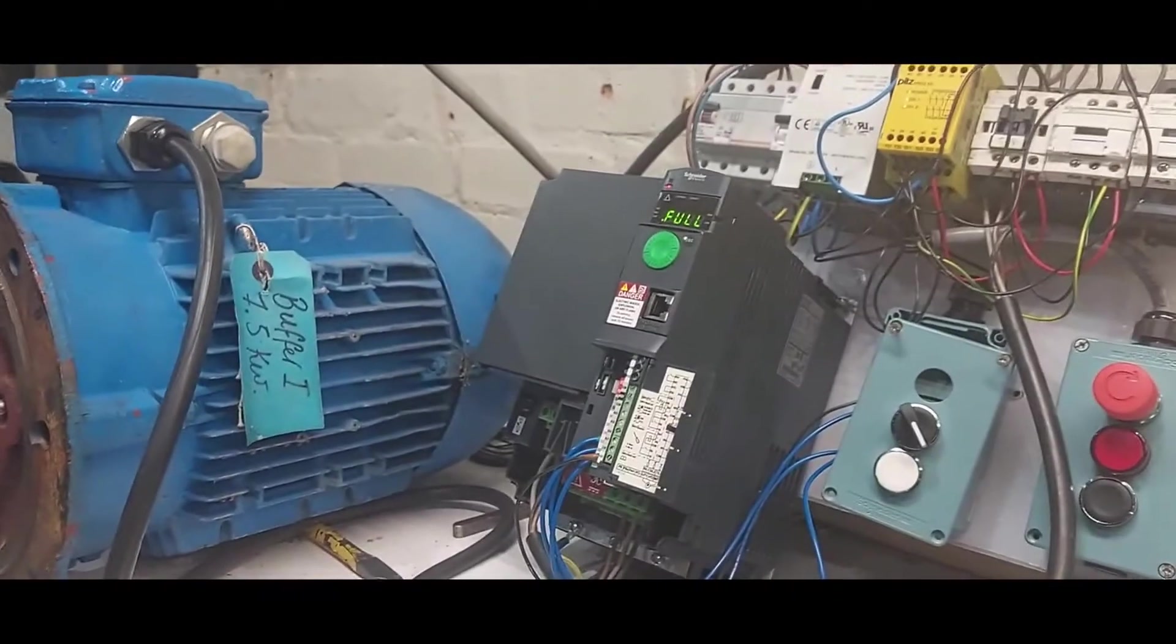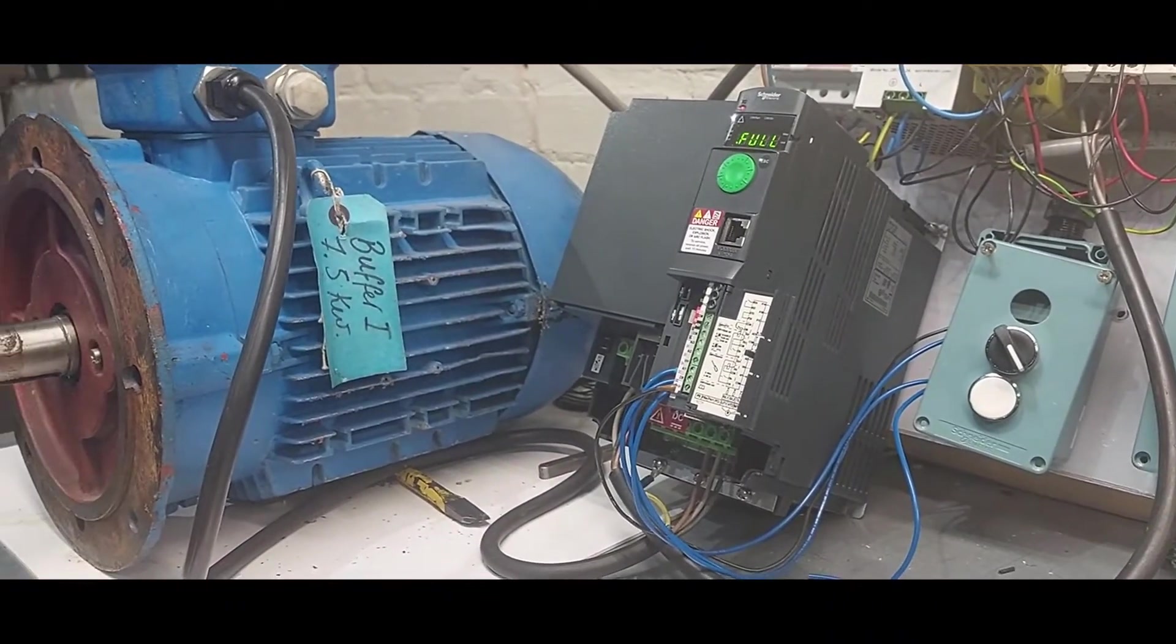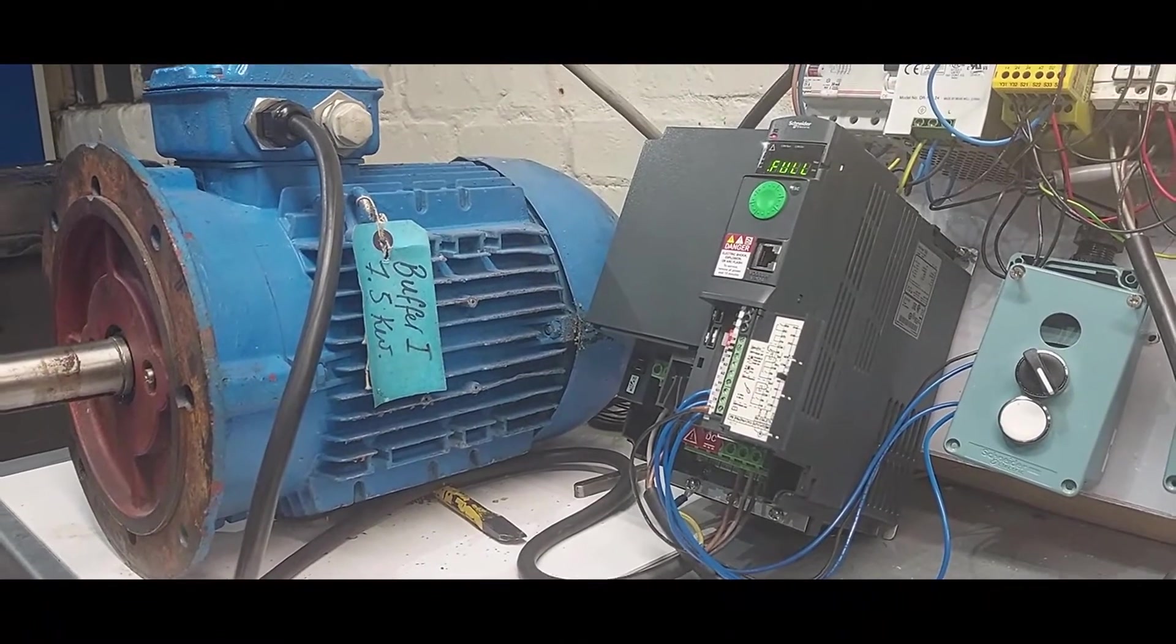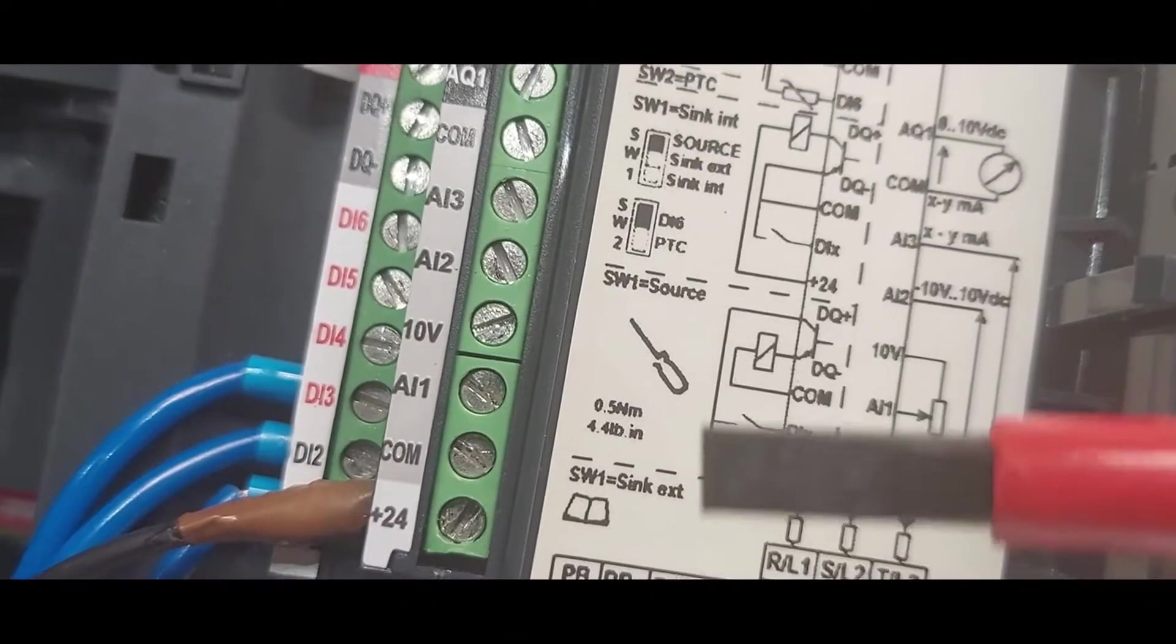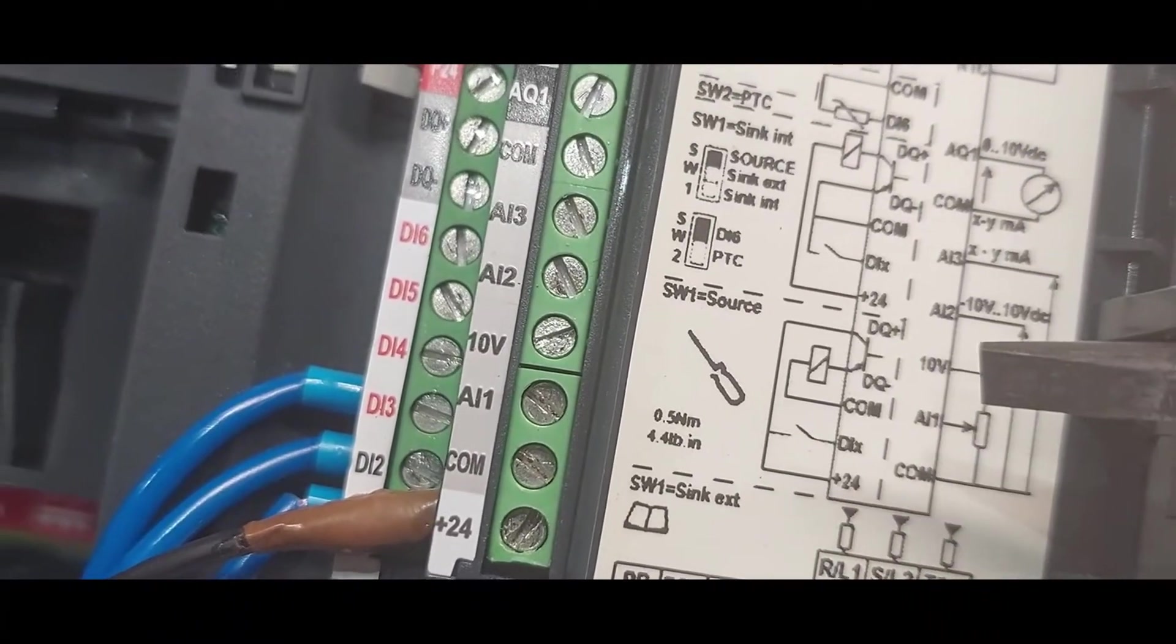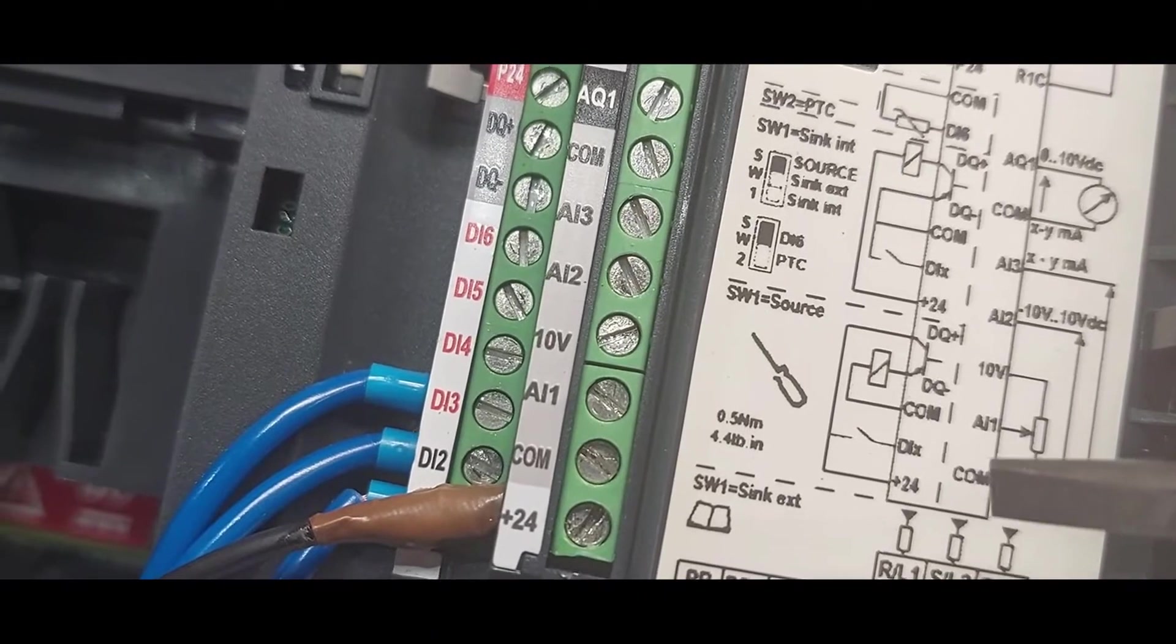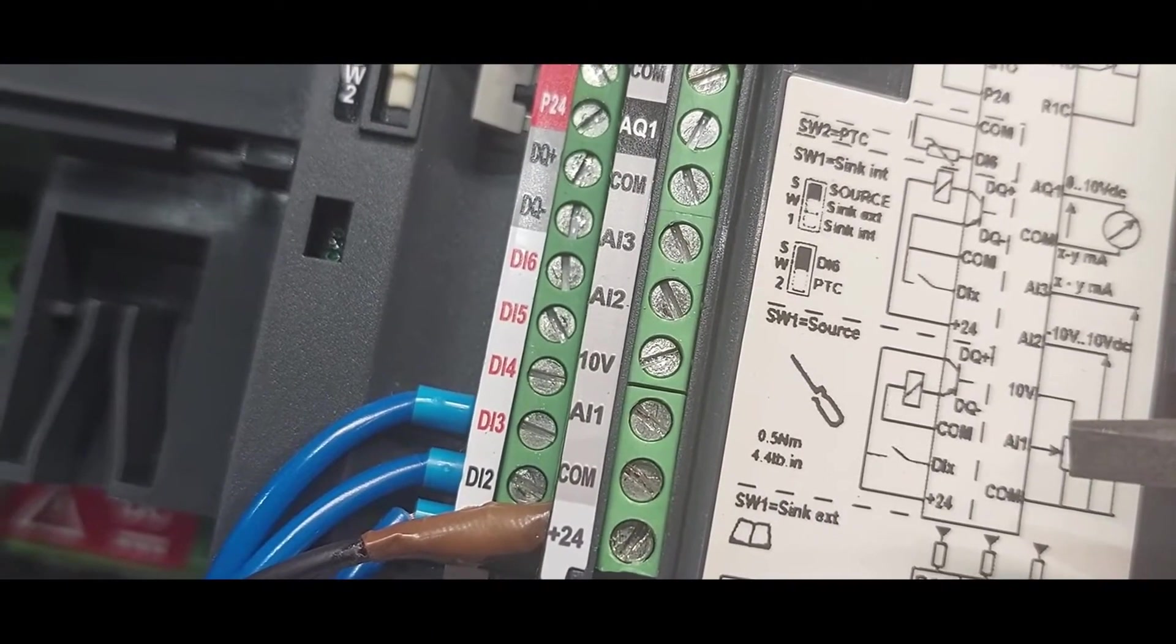To vary the speed of the motor remotely, we can install a potentiometer to the analog input of the inverter. We have to connect it between the 10 volts and the COM, and then we have to put the wiper on the A1, analog input 1.